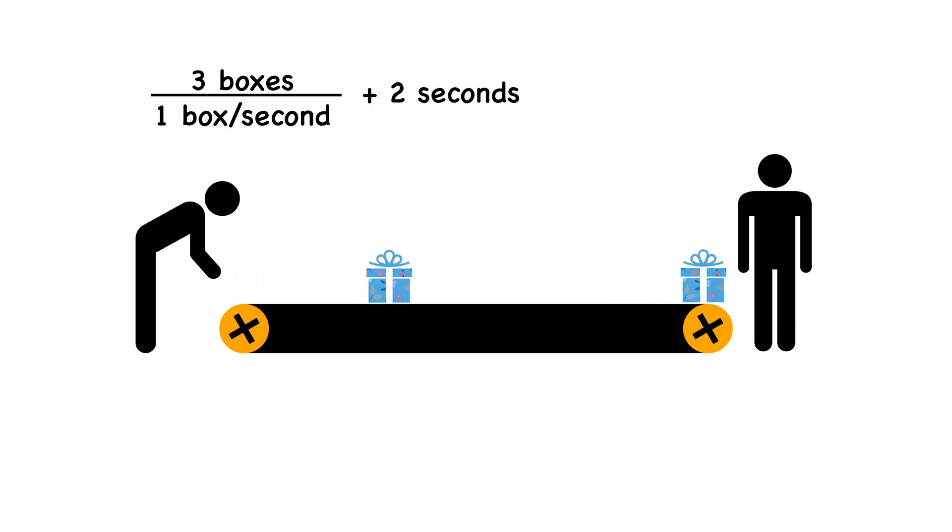Since we place boxes on the belt once every second, and there are three boxes, the last box is placed on the belt at second three, and it'll take two seconds for that last box to reach the end of the belt. So it'll take five seconds in total for all the boxes to reach the end of the belt.